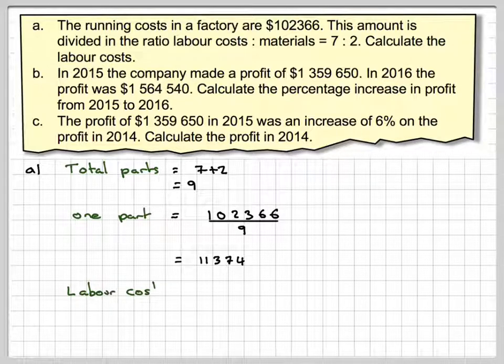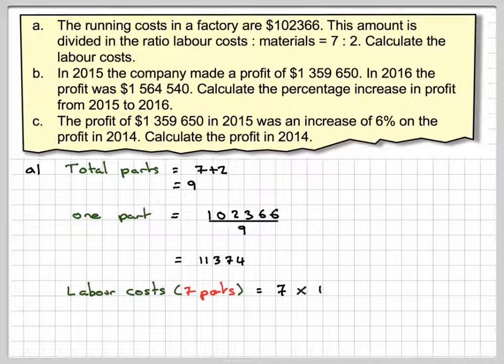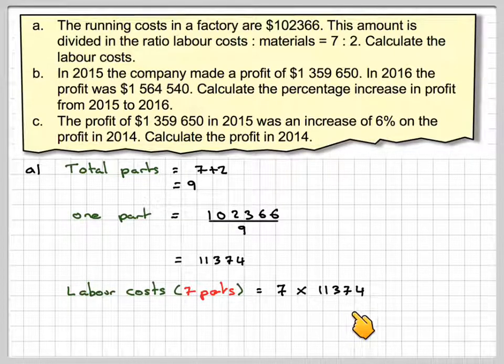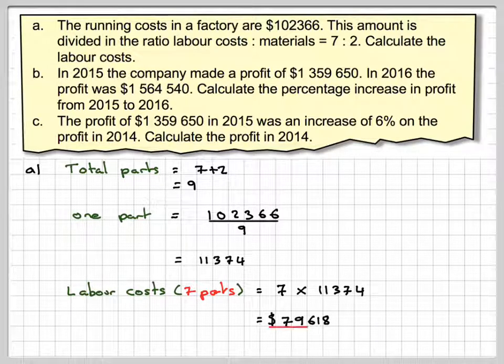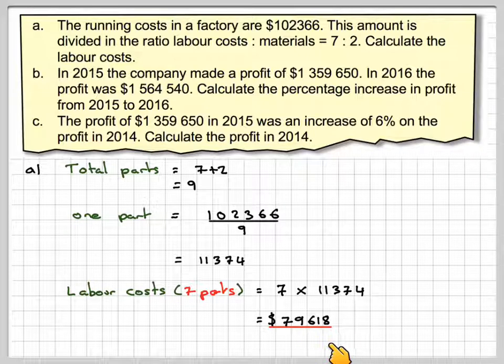And therefore, the labour costs, which are 7 parts, because the ratio here is 7, is going to be 7 times 11,374, which gives me $79,618.